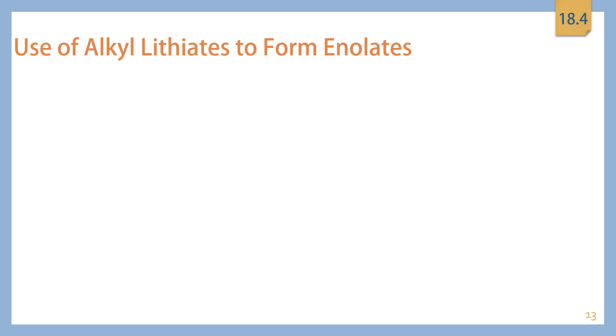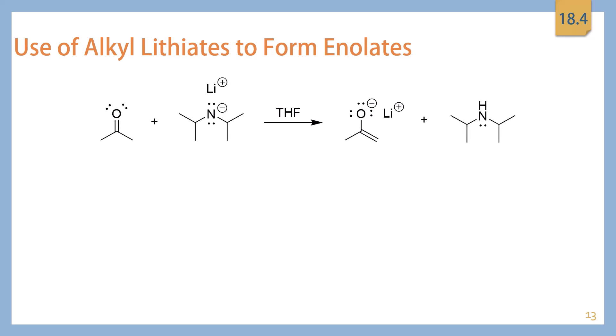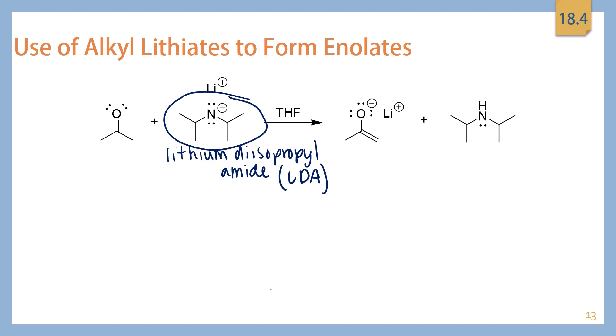This is why we're going to bring back alkylithiates. You might recall them from earlier in Organic 2, using them the same way you would use Grignard reagents — attacking carbonyl carbons to add carbons to a ketone or aldehyde. But we also saw them serving as really strong bases. Especially if you use the right one, you can get them to work only as a base. This base is lithium diisopropyl amide, or LDA. Because of its bulk, it's not going to be a good nucleophile — it's only going to work as a base.